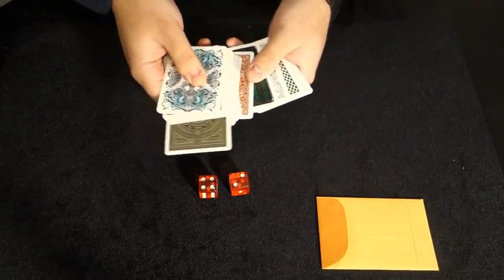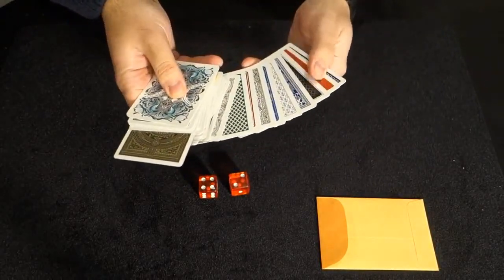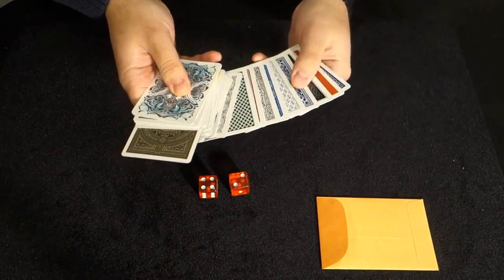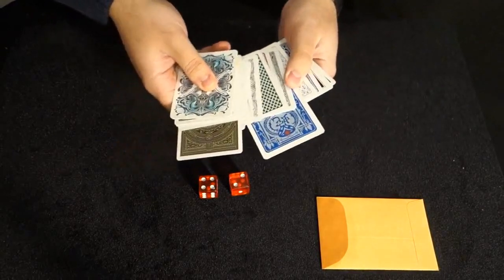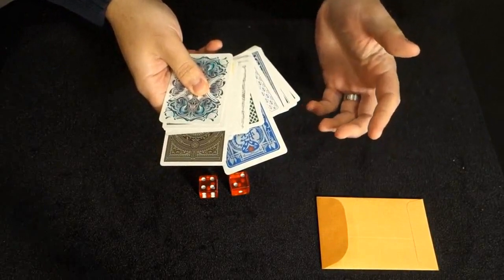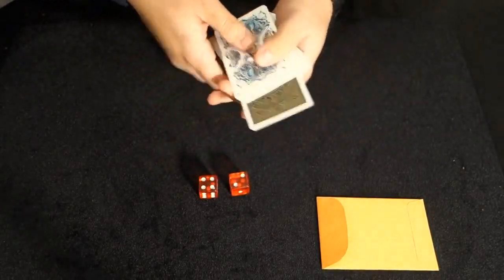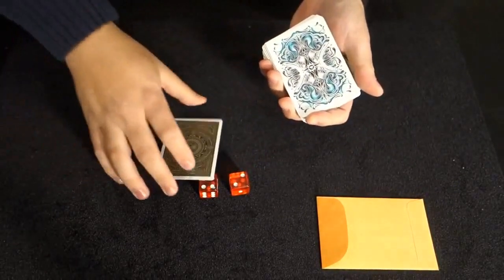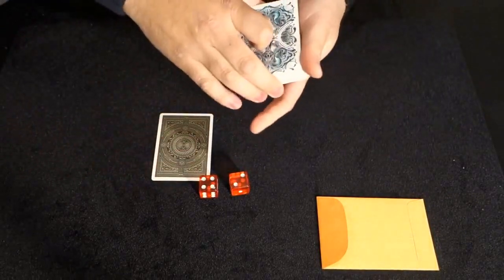Now, here's the interesting thing. You rolled six. So had you set bottom, it would have been one, two, three, four, five, six. It would have been a total different card. Remember that. But you set top and you rolled six. So we'll go with this card here.